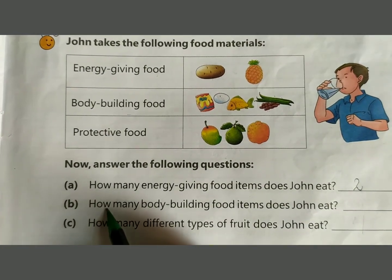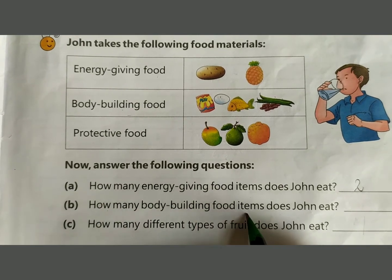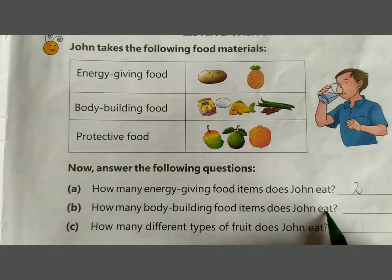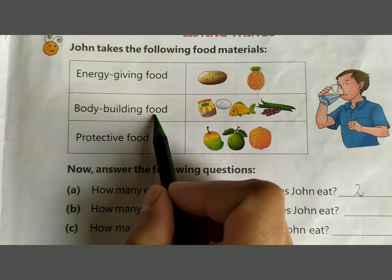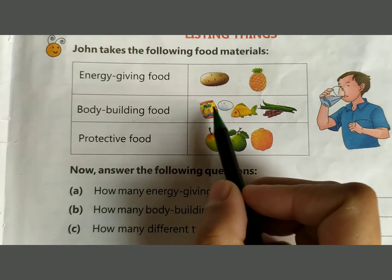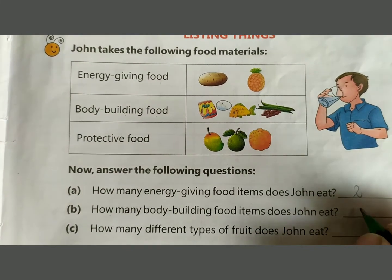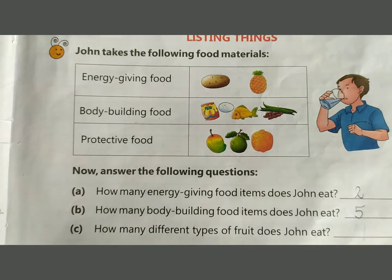Next question: how many body building food items does John eat? Body building food: 1, 2, 3, 4, 5. Five items. Write 5.